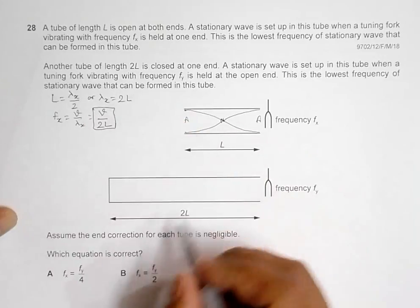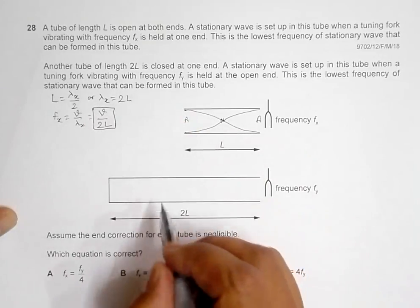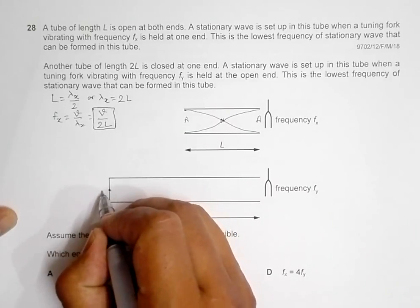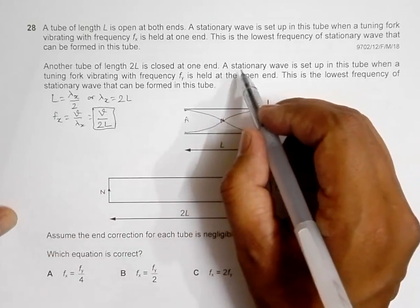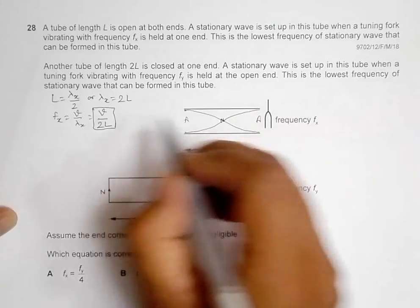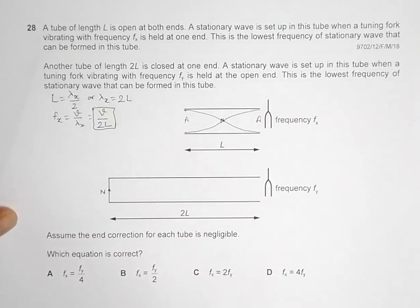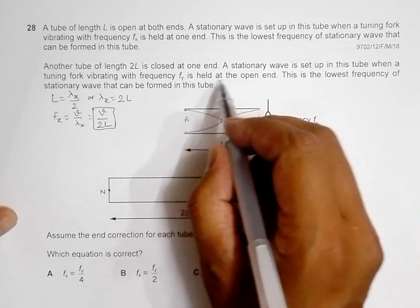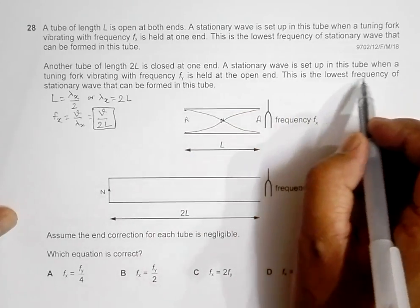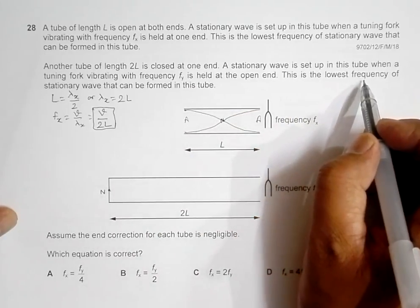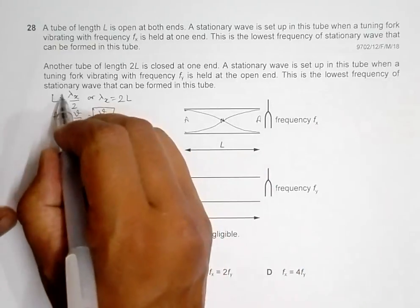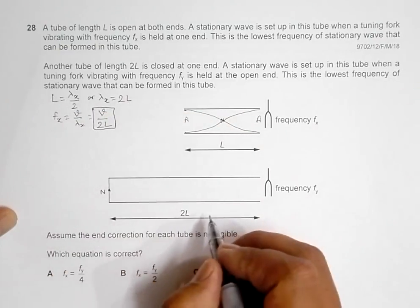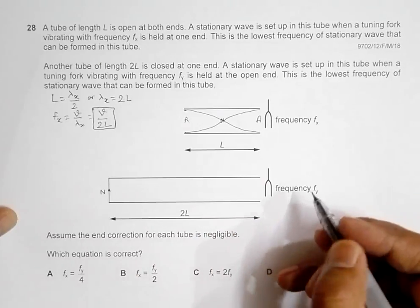In the second tube, the length is twice L and it is closed at one end, so we must have a node here. A stationary wave is set up in this tube with a tuning fork vibrating with frequency fy held at the open end. This is the lowest frequency — the fundamental frequency — of the stationary wave that can be formed in this tube.